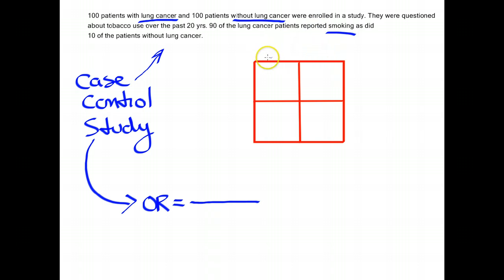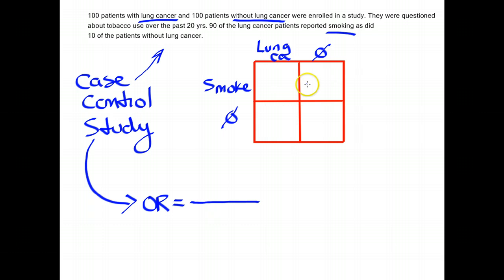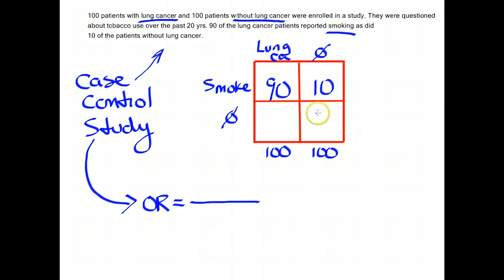So we have to plug in some numbers. By convention on the 2x2 table, disease status goes across the top — a group of patients with lung cancer and a group without. Exposure status goes down the side — people who smoke and people who don't smoke. I enrolled 100 patients with lung cancer and 100 without. 90 of the lung cancer patients smoked, so 90 goes in that box. 10 of the patients without lung cancer smoked, so 10 goes in that box. Everything else has to add up, so 10 goes here and 90 goes here. Now we've got our 2x2 table filled in.